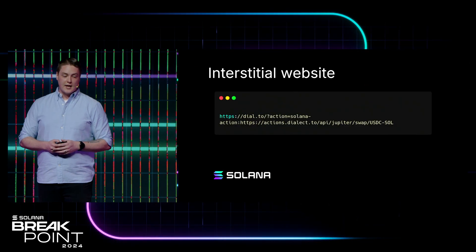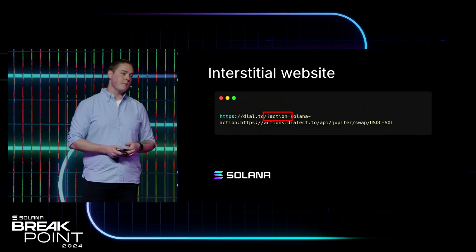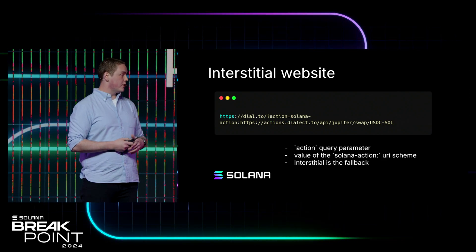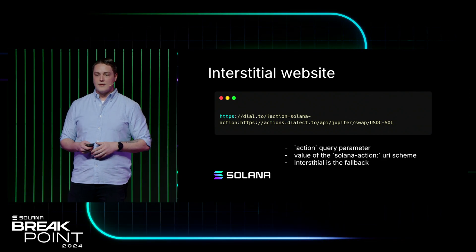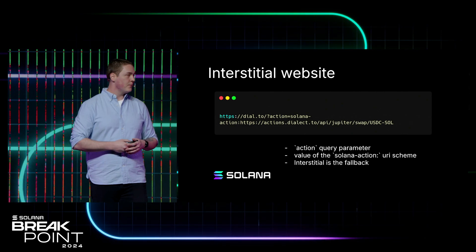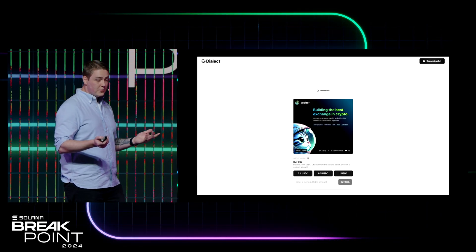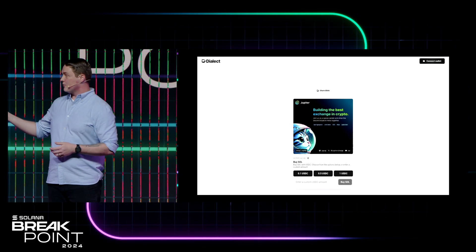This is what it looks like. You see this URL for Jupiter — we have the action query parameter. You can share this, and users can interact. They can click on it if they don't have Blinks enabled, go to dial.to, connect wallet, all that good stuff. You can go to dial.to and that exact link — this is what you'll see. You can swap Sol and Jupiter, or any other Blink that works. dial.to's interstitial website from Dialect just works — you have this standard interface that gets displayed, the same thing that will get displayed on any social media through your wallets. You can connect your wallet and click buttons to start interacting.